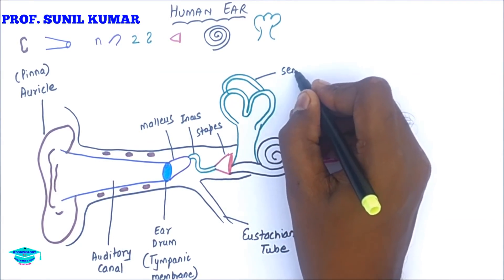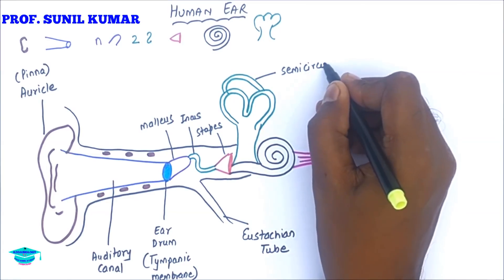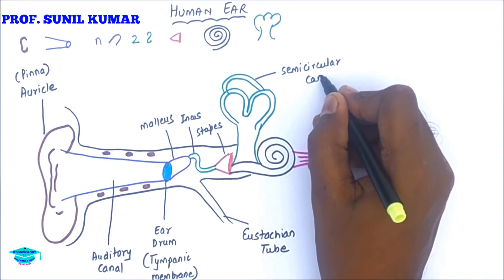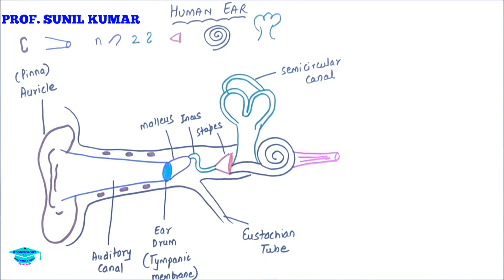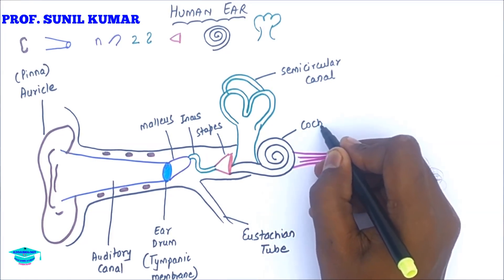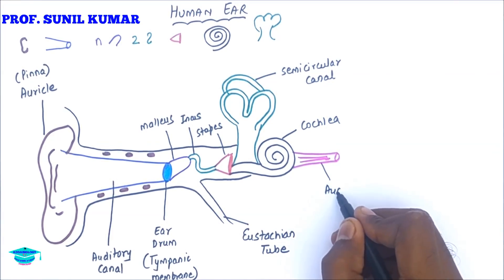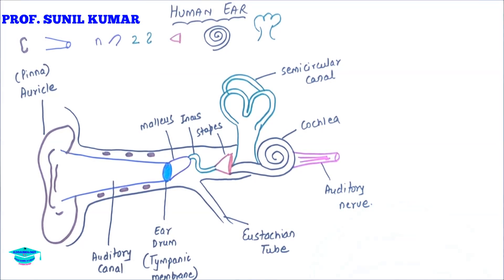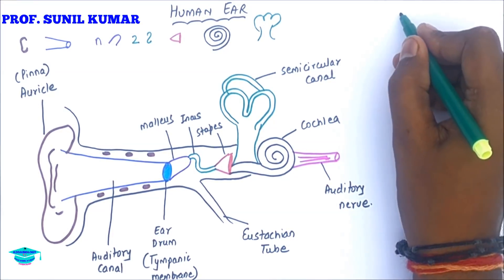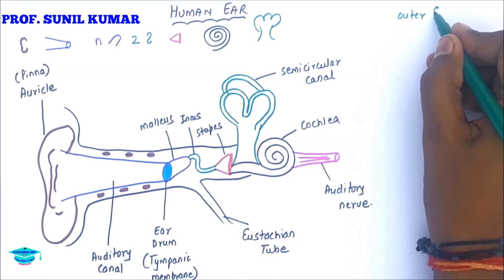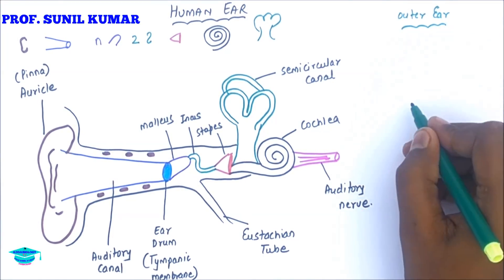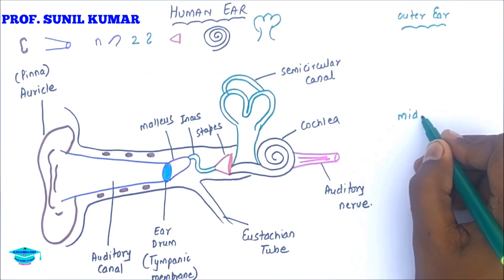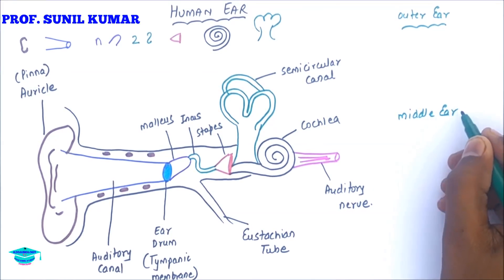The semicircular canal has two and a half turns and helps in the balance of the body, whether stationary or in motion. This is the cochlea — a snail-like structure. The auditory nerve connects to the temporal lobe of the brain.